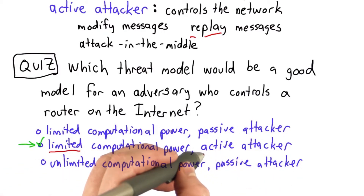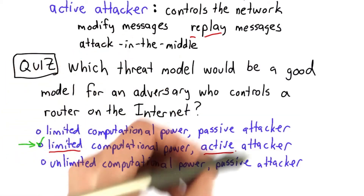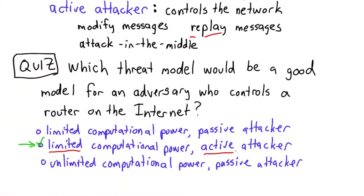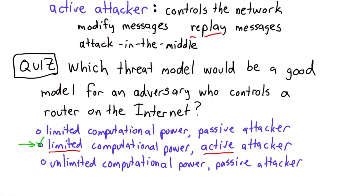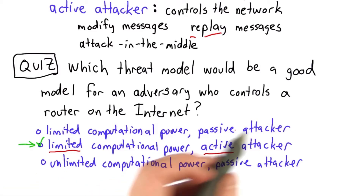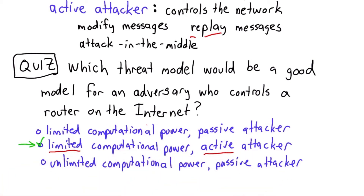And we're going to assume the attacker is active — that they can intercept messages, they can try to analyze what they hear, but they can also modify messages and replay messages and do anything they could do to disrupt the protocol by changing things on the network. So that's the main threat model that our protocols are designed to resist.